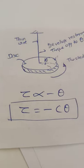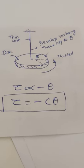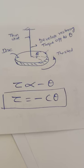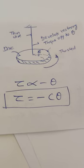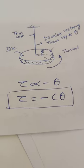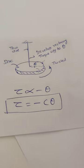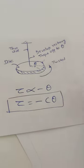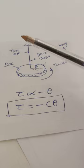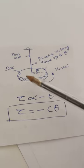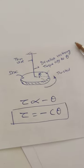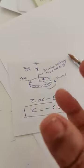Here I'll explain the example of restoring torque, how it develops, and how we understand the phenomena of angular SHM. Suppose this is a disc supported by a thin wire. We take this disc and start twisting it like this.